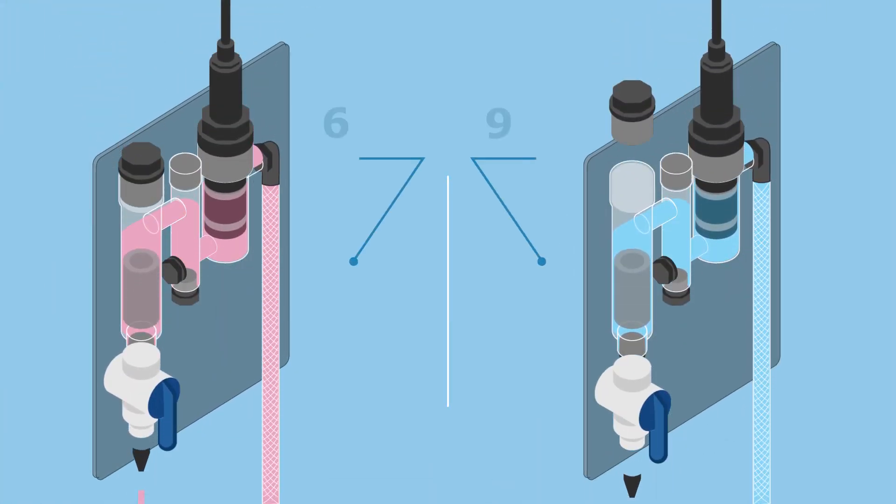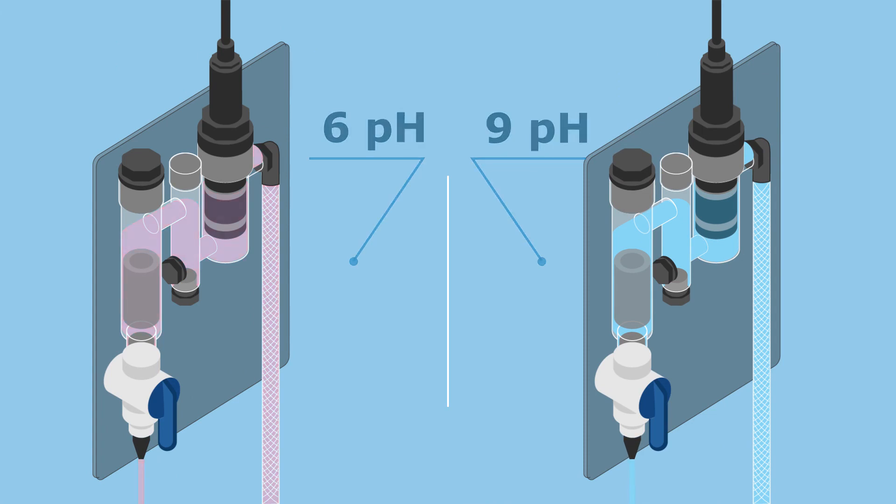This is thanks to an amperometric sensor that is pH independent and provides ranges from 0 to 2 ppm up to 0 to 200 ppm.